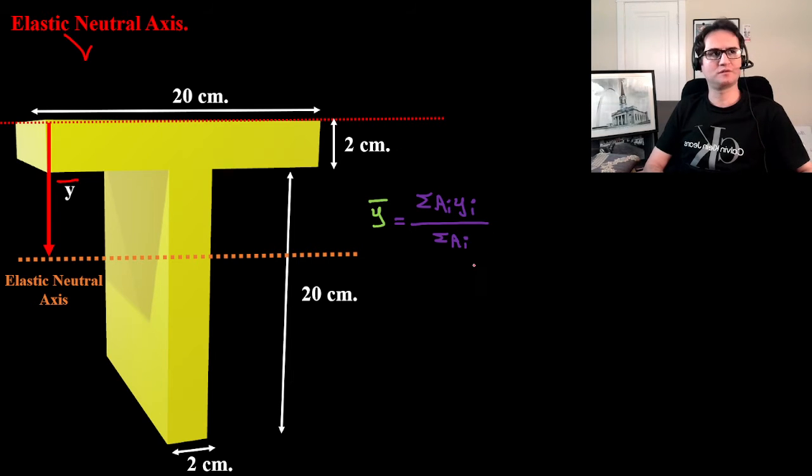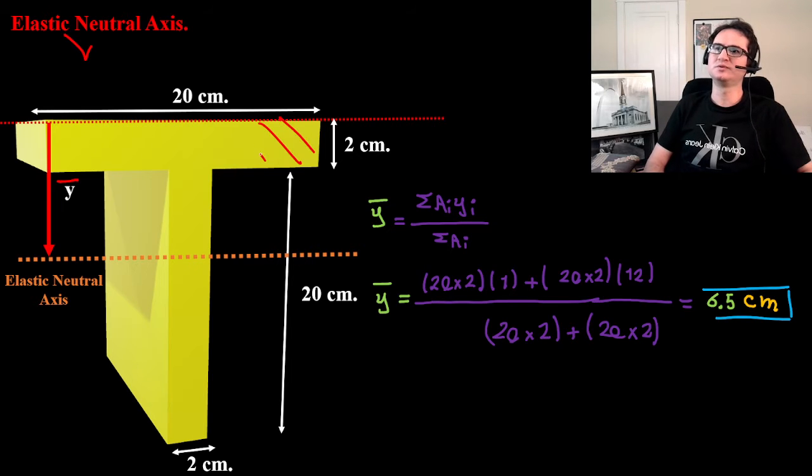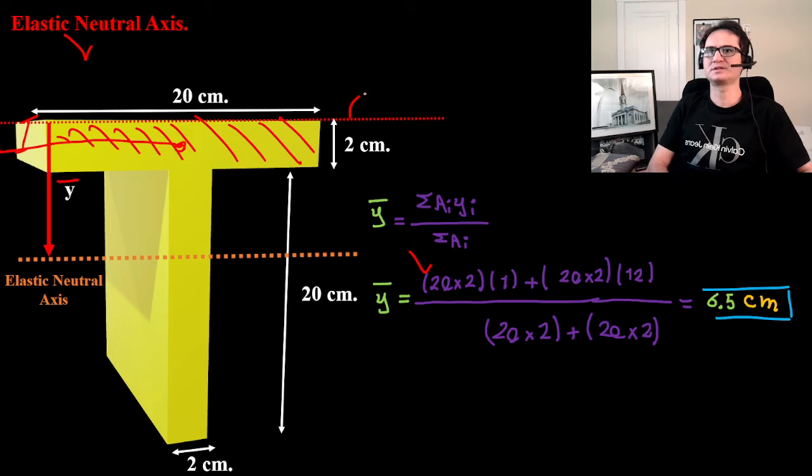And if you do so, it gives you this area: that's 20 times 2 times its own centroid to the origin. So this is our origin and we are moving downward to calculate y-bar, which is this height, half of the height of flange, and plus the other half...